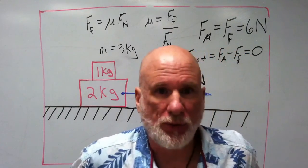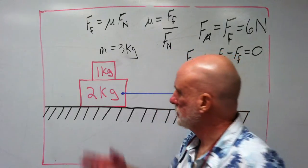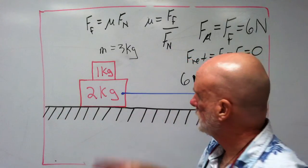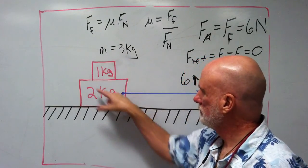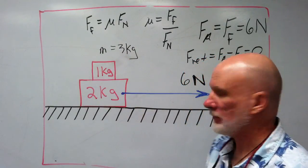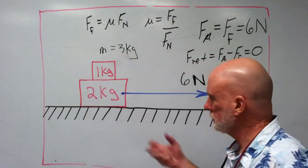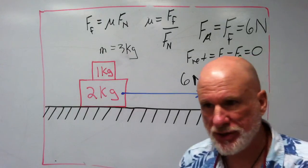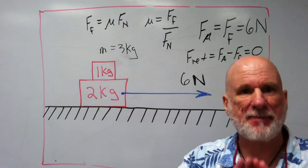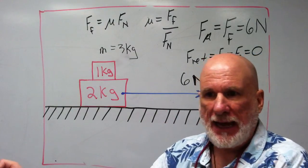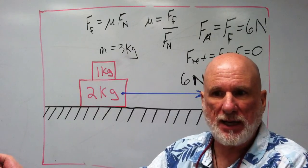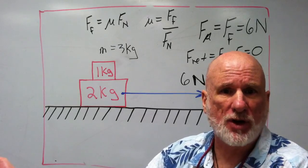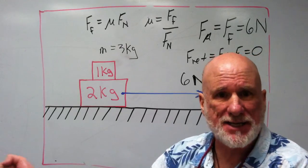All right, I'd like to do a problem. On this lab bench, I have a three kilogram vehicle that I'm pulling across the bench using six newtons, the applied force. The applied force is going to overcome the friction, and the vehicle will go at a constant velocity.